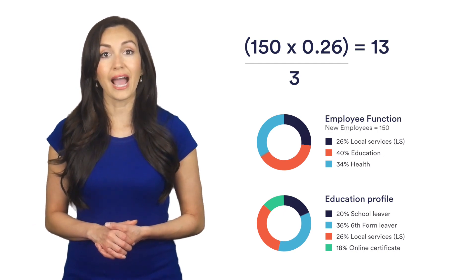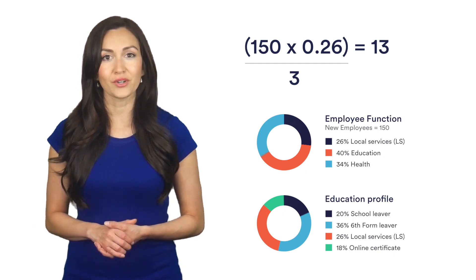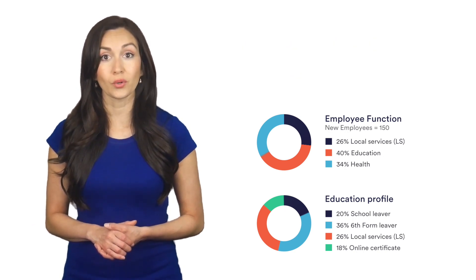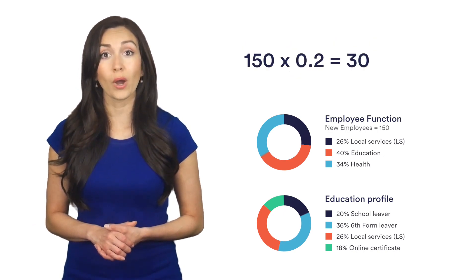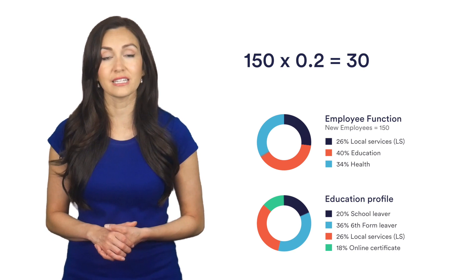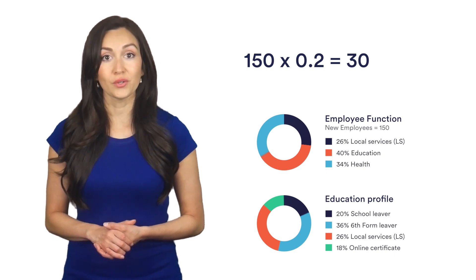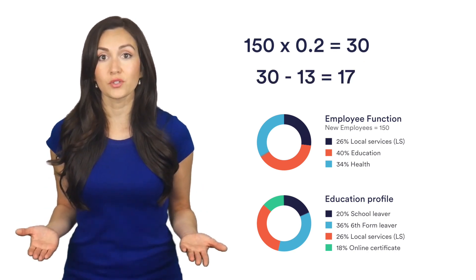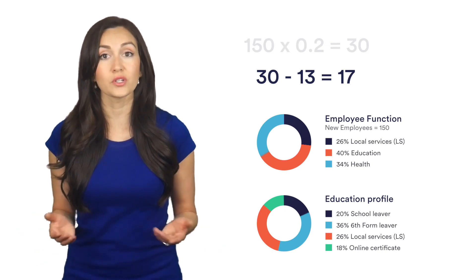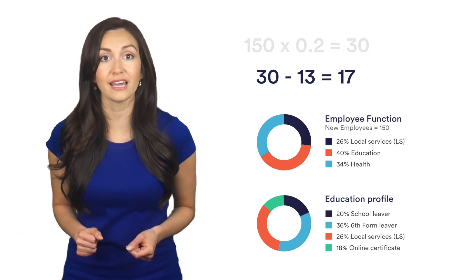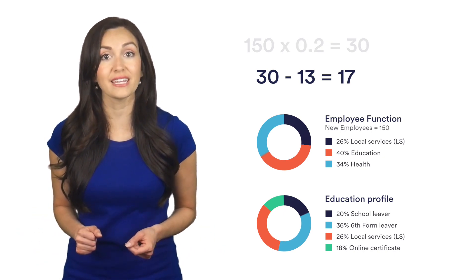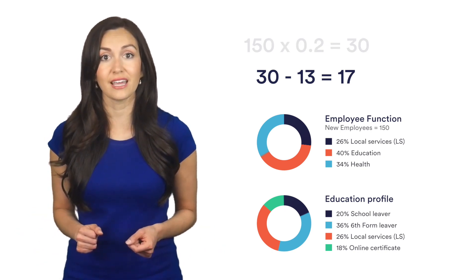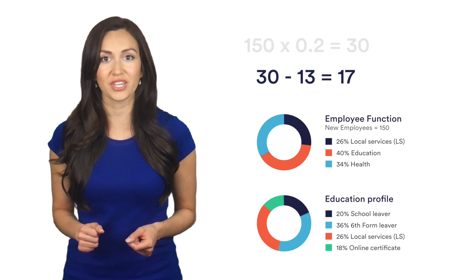Now work out how many school leavers there were in total. 150 times 0.2 equals 30. If there are 30 school leavers in total and 13 work in LS, then the remaining 17 must work in either health or education. And that's our answer.